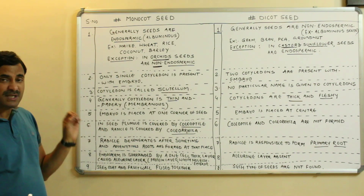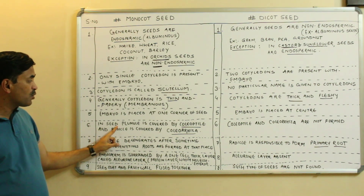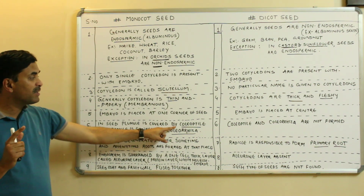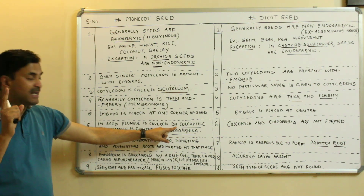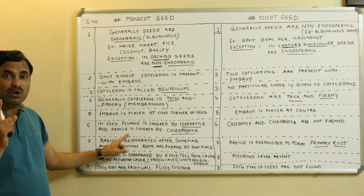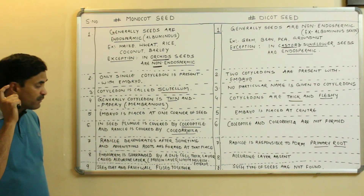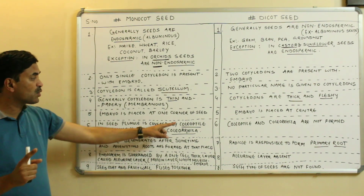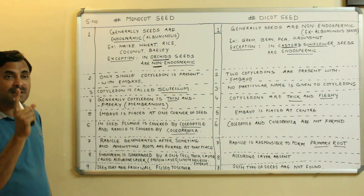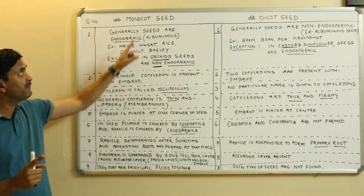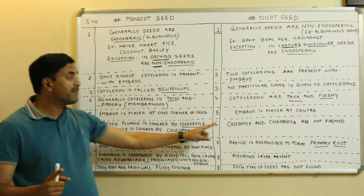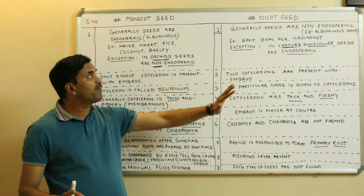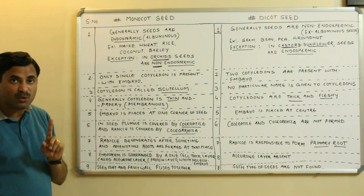Sixth point: in monocot seeds the plumule is covered by a sheath called the coleoptile, and the radicle is covered by a sheath called the coleorhiza. These are characteristic features of monocot seeds. Coleoptile and coleorhiza are not found at all in dicot seeds — they are features of monocot seeds only.